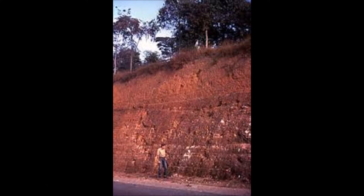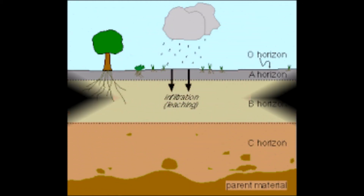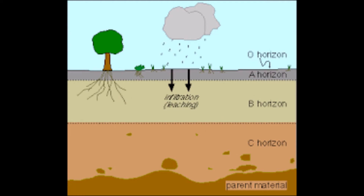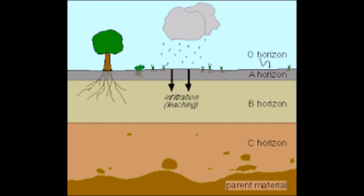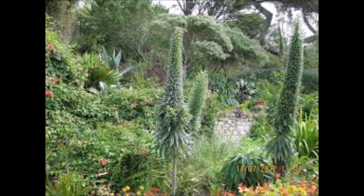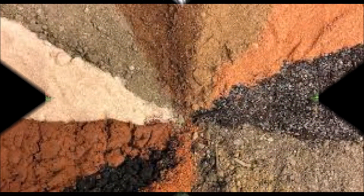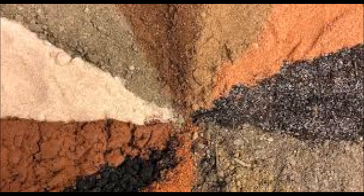Texture describes how a soil feels to the touch. The texture of a soil is controlled by the amount of sand, silt, and clay particles in it. Three factors influence various processes affecting soil and soil characteristics: climate, relief, parent material, living things, and time are important in controlling the formation of soils. Climate is the most important factor in soil formation.